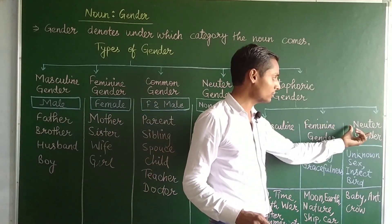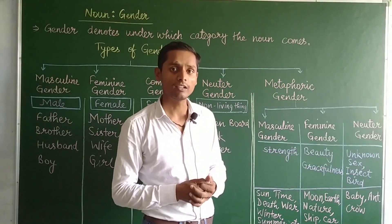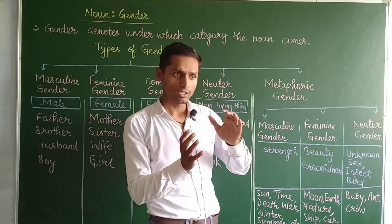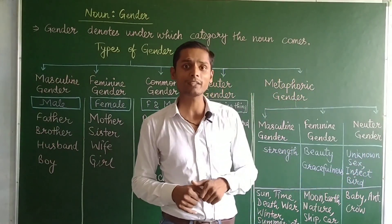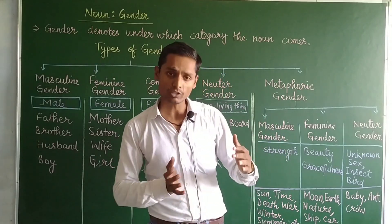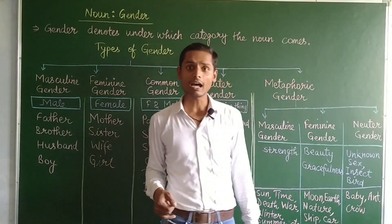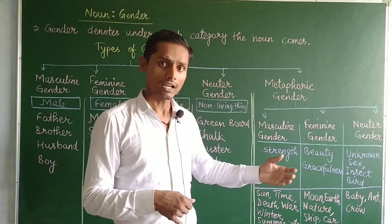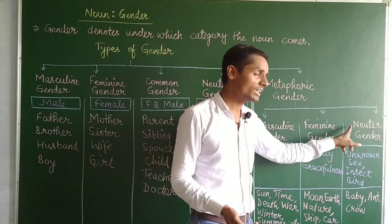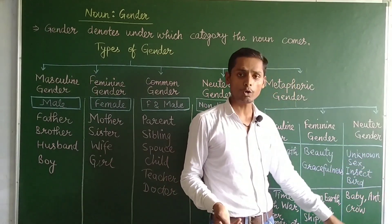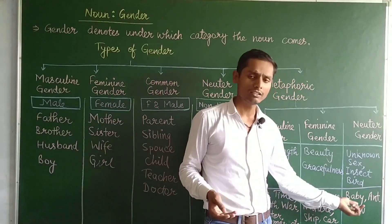A non-living thing has no sex, so it falls under neutral gender. But for living things, we can determine gender. For example, a baby — if I have a baby, we may not know its sex, so it can be common gender. An ant is an insect; there are female ants, so ants can be categorized by gender.